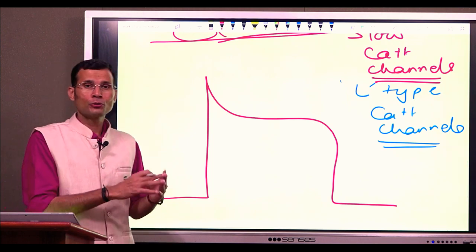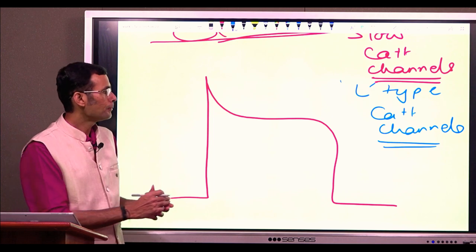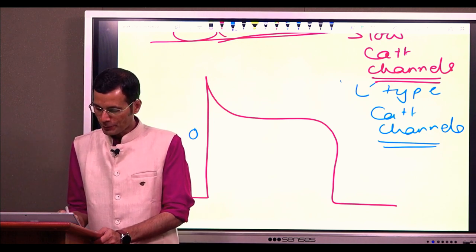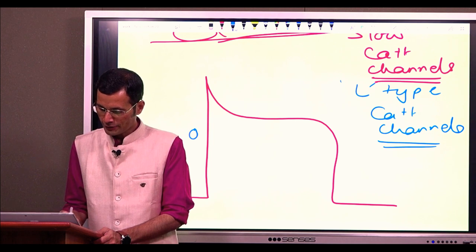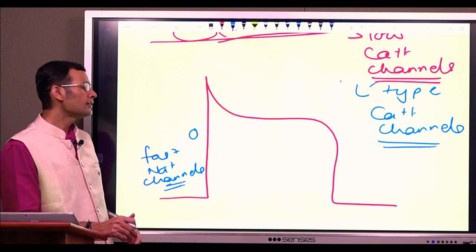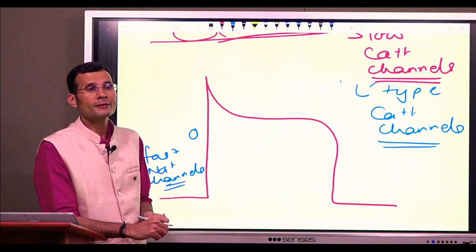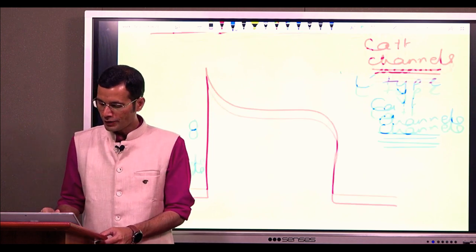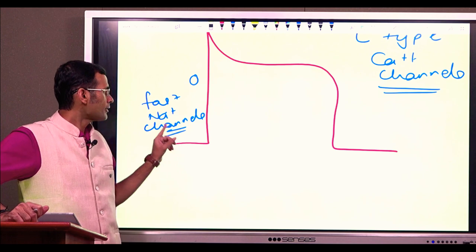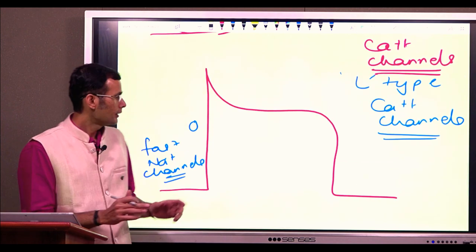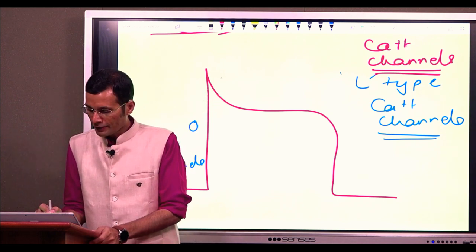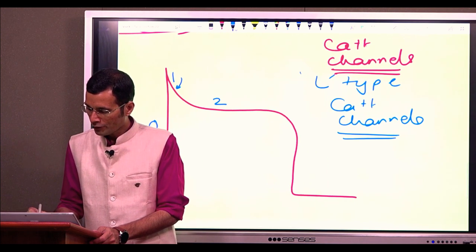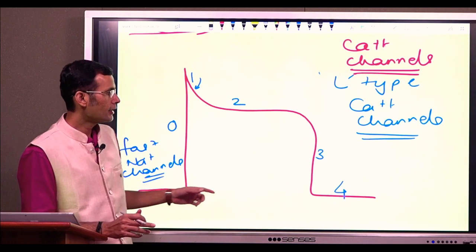These L-type channels are slow to open and slow to close. Looking at the phases of the cardiac action potential: phase 0 is the rapid upstroke due to fast sodium channels — tetrodotoxin-sensitive fast sodium channels (tetrodotoxin is a poison from puffer fish that blocks these channels). Then there is phase 1, phase 2 which is the plateau, phase 3, and phase 4 — these are the phases in the Purkinje fiber action potential.